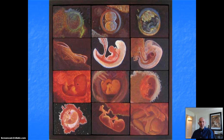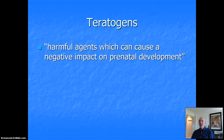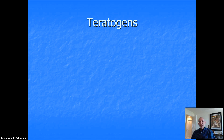When we look at prenatal development, plenty of things can go wrong during the normal development of a baby in the womb. A growing body of research suggests risk factors increase with mother's advancing age in her 40s, high levels of unmanaged stress, and poor nutrition. And then we have the issue of teratogens, which we define as harmful agents that can cause a negative impact on prenatal development. We have three big subtypes of teratogens: diseases, toxins, and drugs.